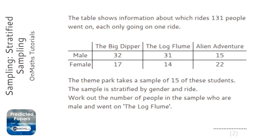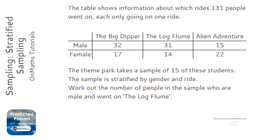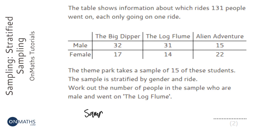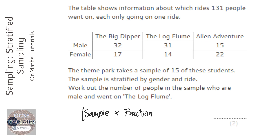Whenever you're finding a stratified sample, you always take the number in the sample and multiply it by the fraction of that particular group that you're interested in.